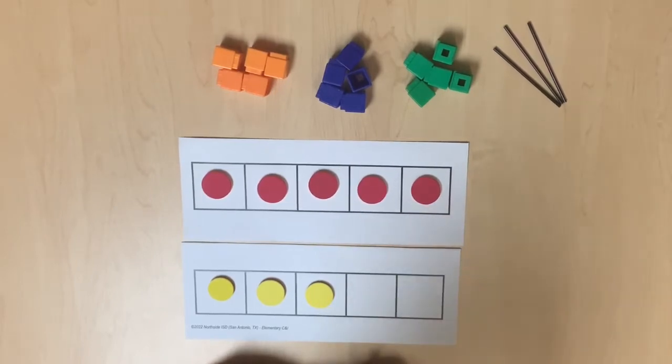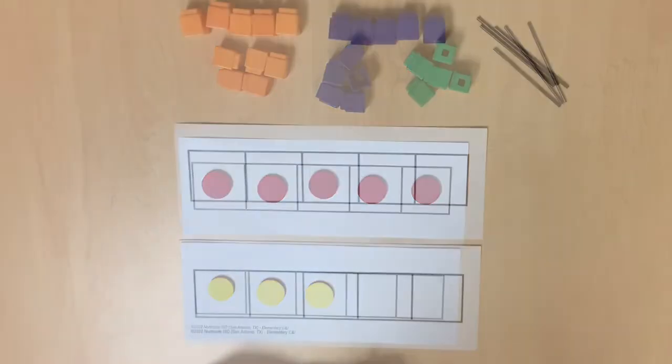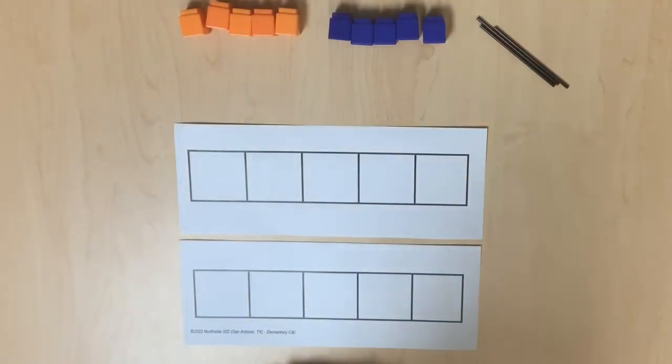Are there fewer red counters or fewer yellow counters? As students continue to compare sets of objects using two 5-frames, a matching strategy can be used to make the comparisons.